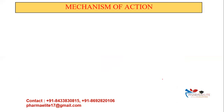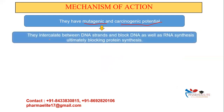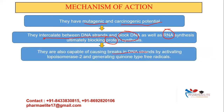Now the mechanism of action — very important. Because it is an anti-cancer drug, it is mutagenic and has carcinogenic potential as well. It will intercalate between the DNA strands, placing itself within the DNA, and it will block DNA synthesis as well as RNA synthesis. If RNA synthesis is blocked, then protein synthesis is also blocked. Additionally, they are capable of causing breaks in DNA strands.